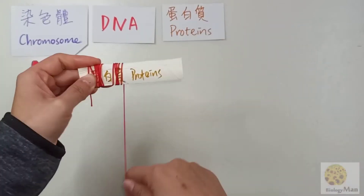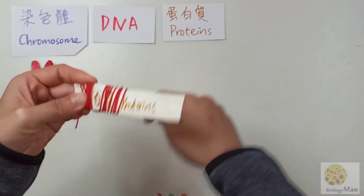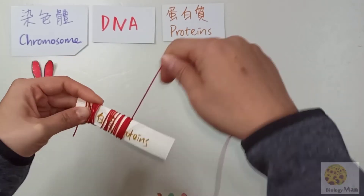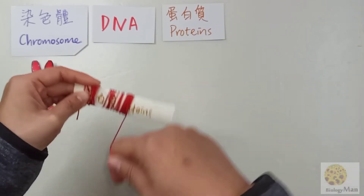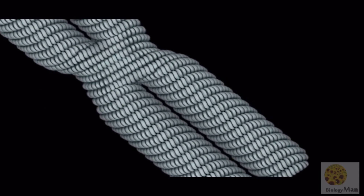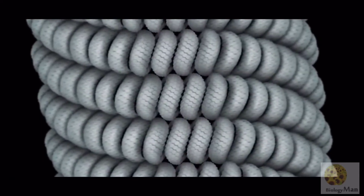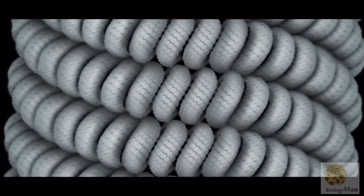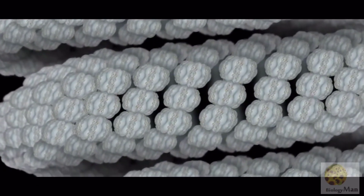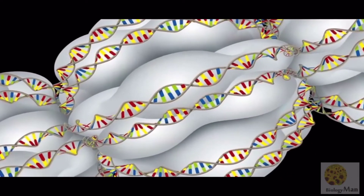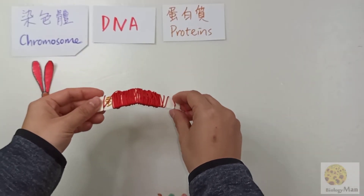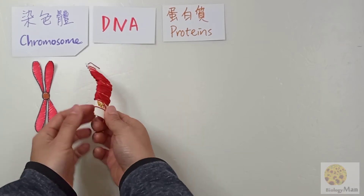In this video I just use one protein, but in the actual situation there are so many proteins, and the coiling method here is simplified. Here I'll show you the real situation — you can see there are so many proteins involved in the coiling of the DNA. The white ones are the proteins and you can see the DNA is coiled around them.